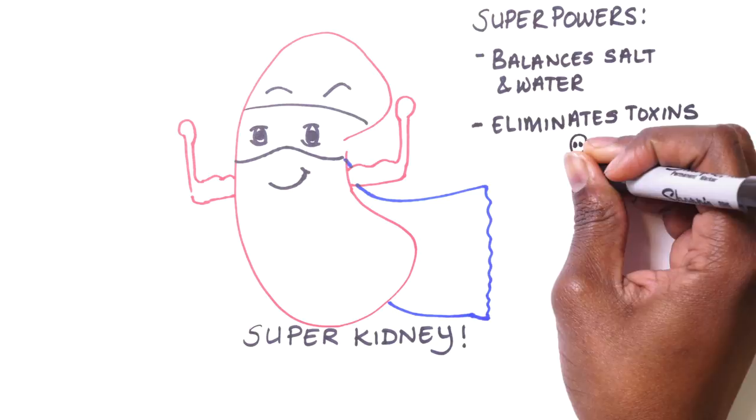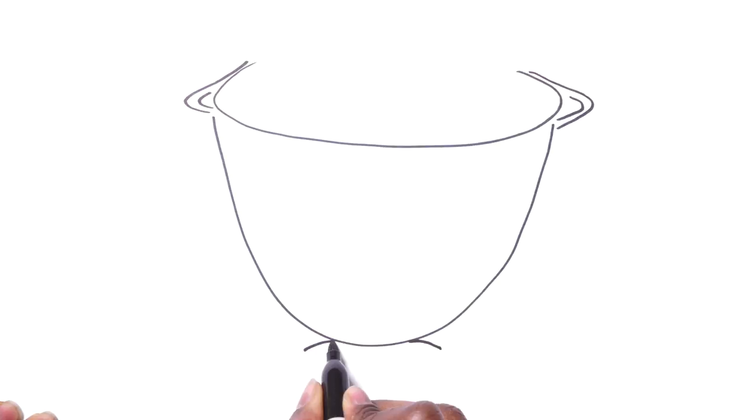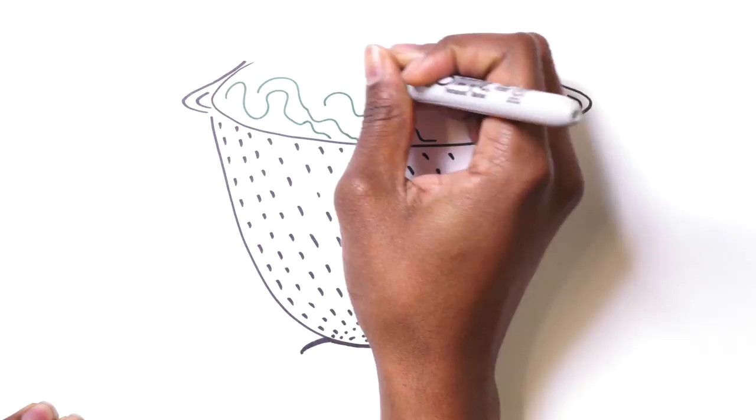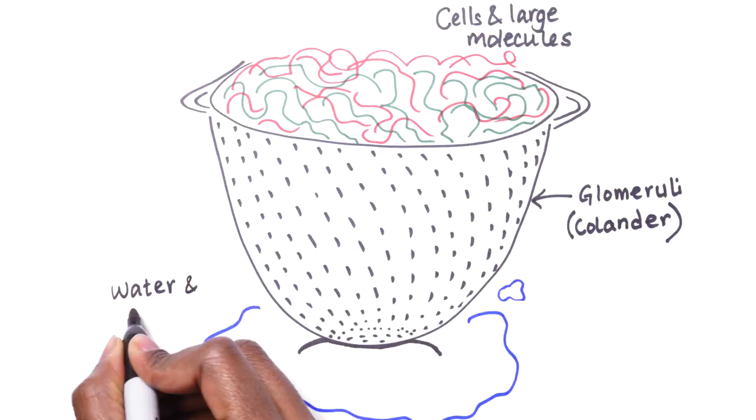Our circulating blood is cleaned by passing through tiny filters in the kidney. Imagine draining your pasta in a large colander separating the pasta from the excess water. Our kidneys allow water and small molecules to pass through but keep cells and large molecules in the circulation. There are about a million filters or glomeruli in each human kidney.